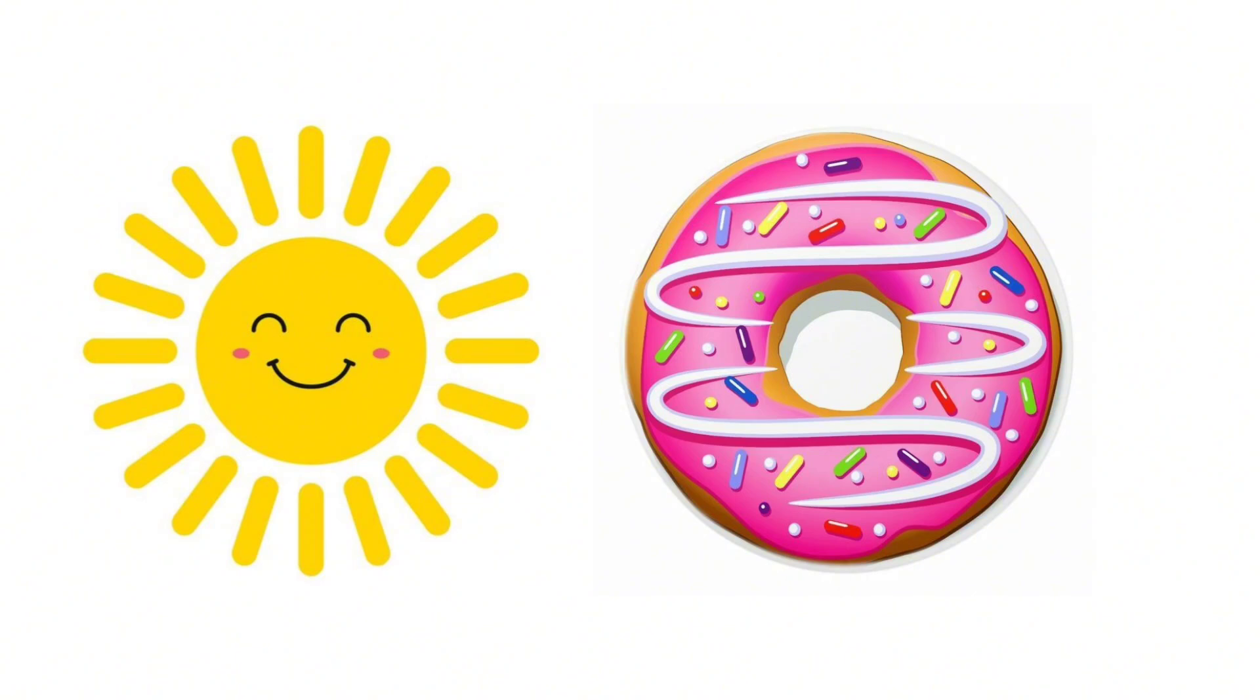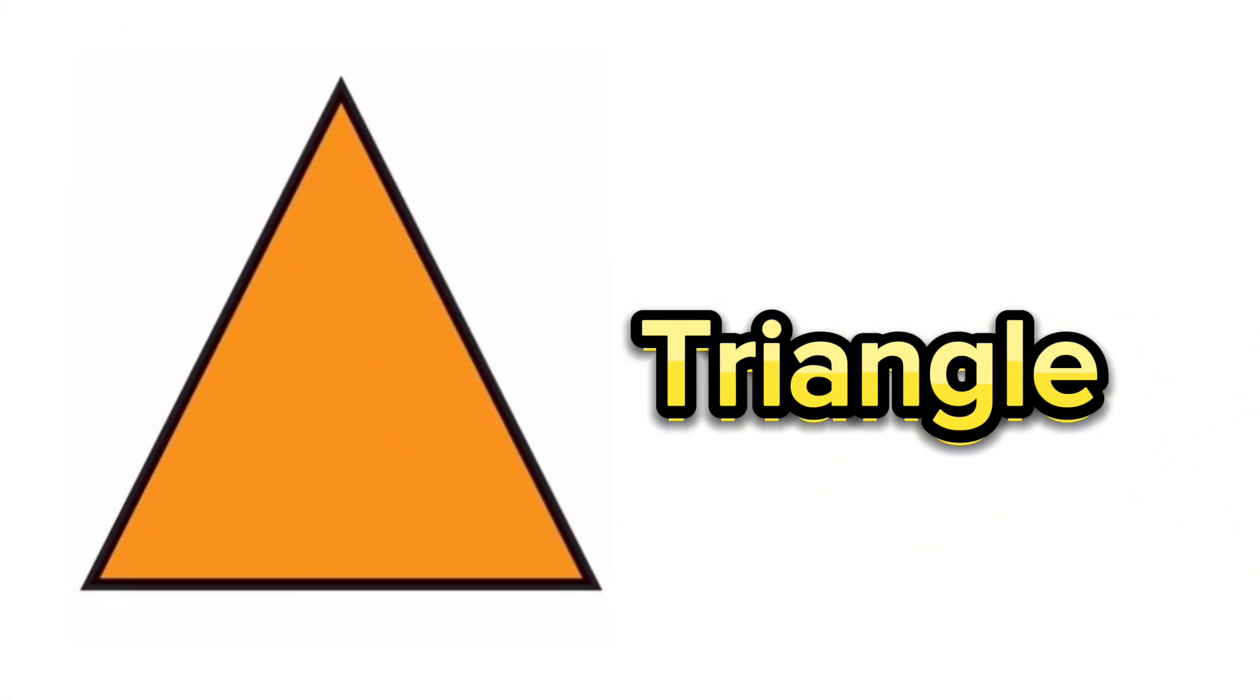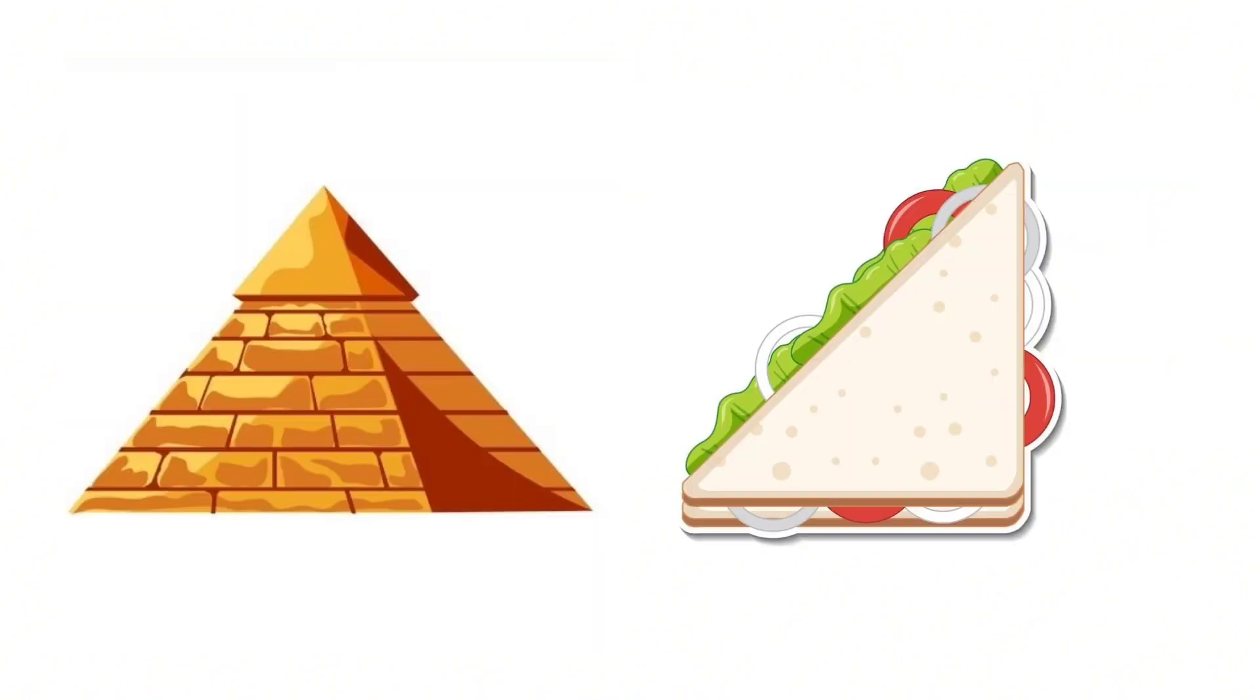Next shape is triangle. Triangle has three sides and three angles. Examples of triangle objects are pyramids and sandwich. Do you like to eat sandwich? Yes? Good.